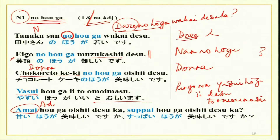With adjectives also, in a similar manner: A desu ka, B desu ka? Amai hou ga ii desu ka, suppai hou ga ii desu ka — which is better? Asking your preference. Using hou ga with nouns and i-adjectives is now very clear.